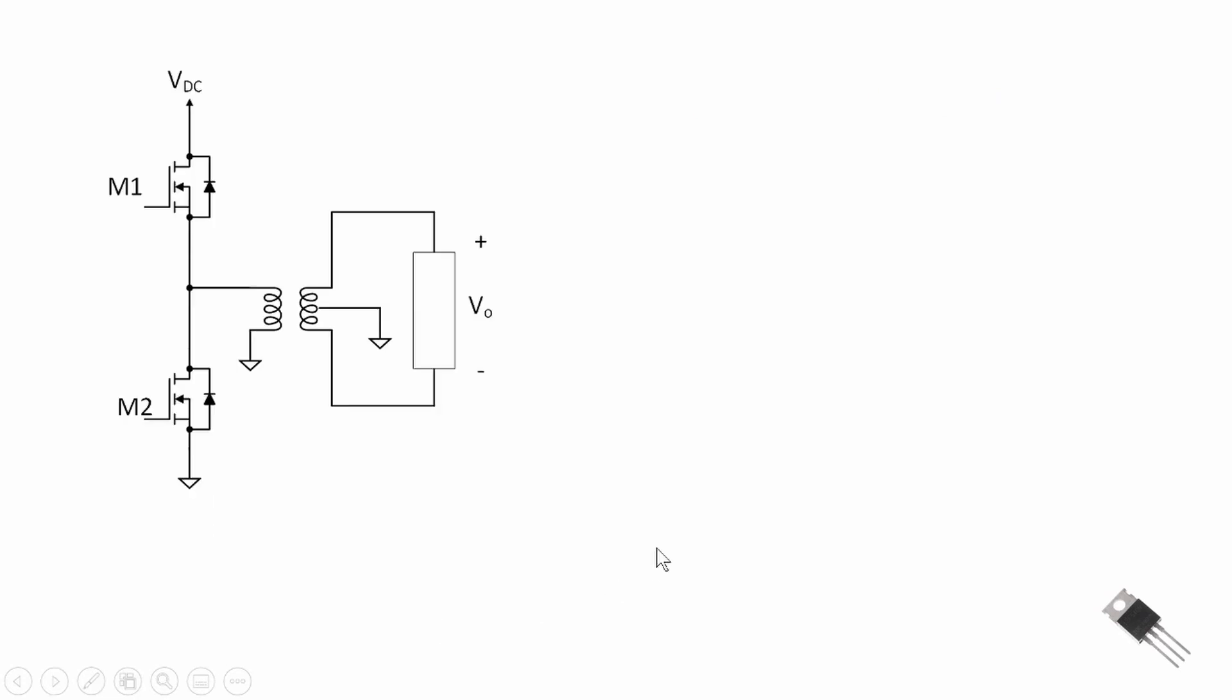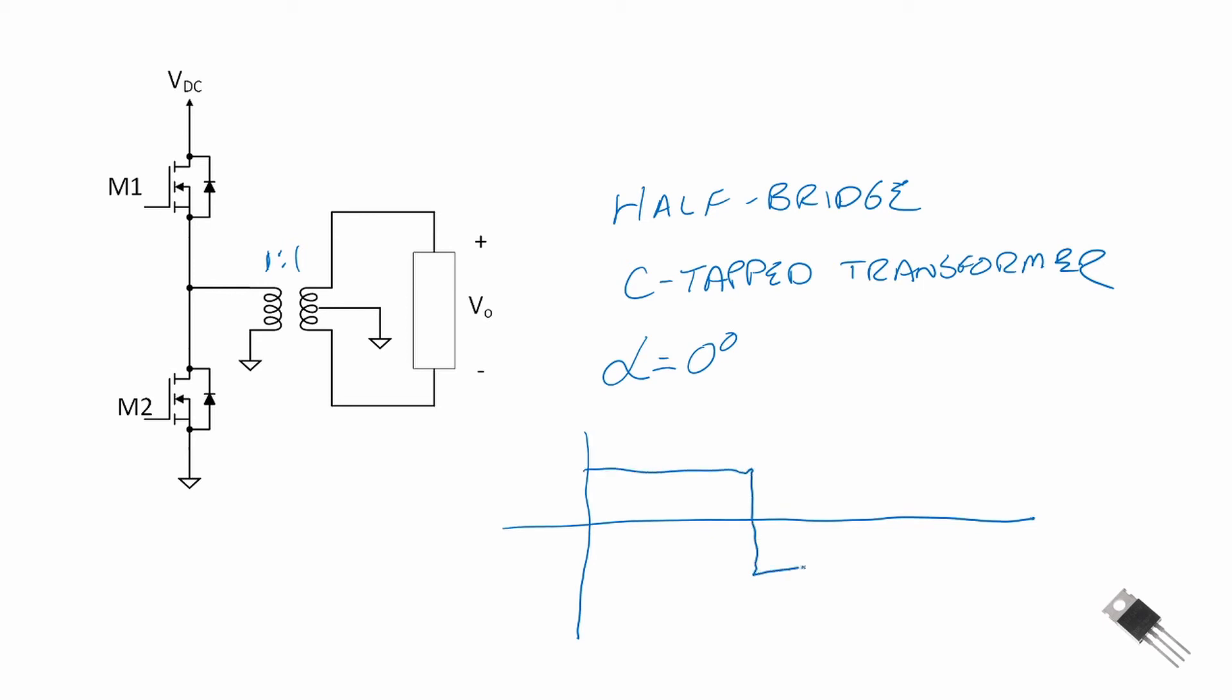In those past two examples, we were using an H-bridge to reverse the polarity across the load. We can also use a half-bridge with a center tap transformer. Assuming we have a conduction angle alpha equal to zero degrees, where we start the pulse right at zero and finish right at 180 degrees, and if we assume that we have a one-for-one winding on our transformer, we would see an output that looked like this.